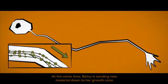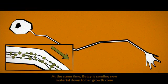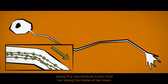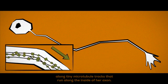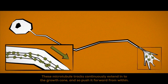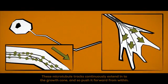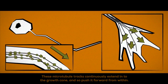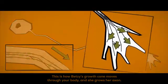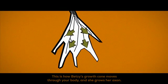At the same time, Betsy is sending new material down to her growth cone along tiny microtubule tracks that run along the inside of her axon. These microtubule tracks continuously extend further into the growth cone and so push it forward from within. This is how Betsy's growth cone moves through your body and she grows her axon.